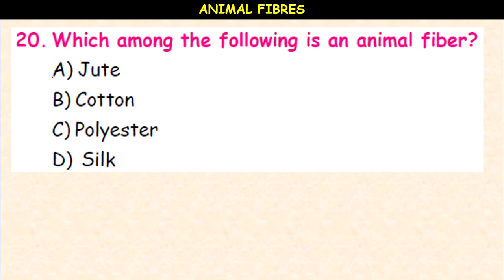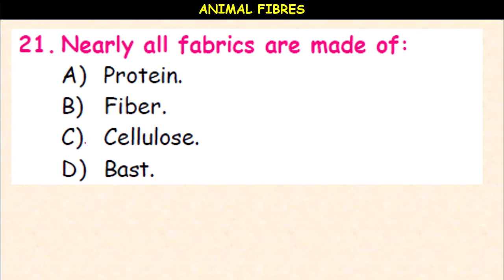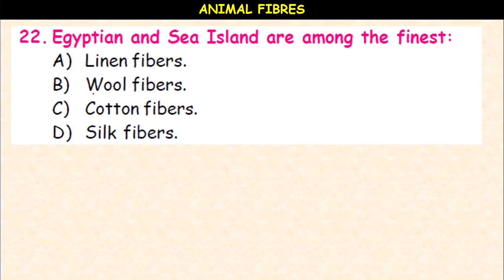Which among the following is an animal fiber — jute, cotton, polyester, or silk? Silk is an animal fiber. Nearly all fabrics are made of protein, fiber, cellulose, or bast fiber? The answer is fiber. Egyptian and sea island are among the finest linen, wool, cotton, or silk fibers? It is cotton fiber — Egyptian and sea island are among the finest cotton fibers.